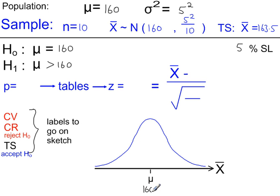So in our sketch, the mean of 160 goes in the centre. And we're looking for an increase. So if this arrow points to the right, you shade on the right-hand side of the distribution. And 5% goes in here, the significance level.